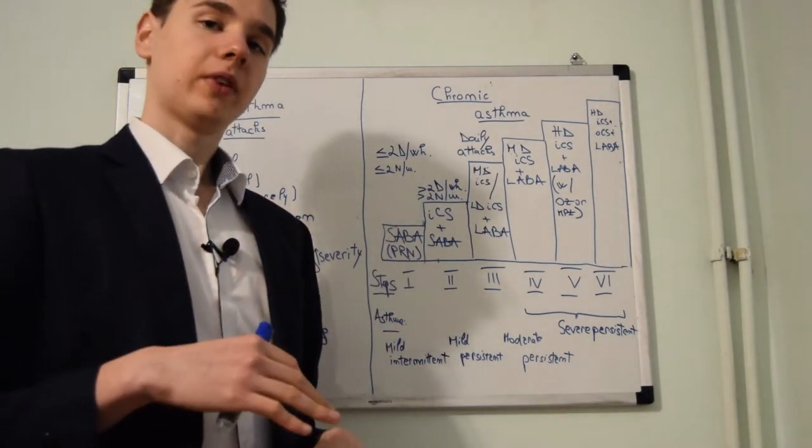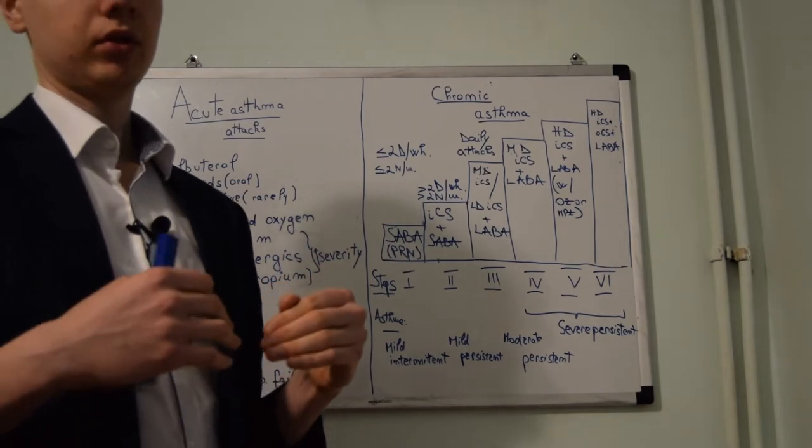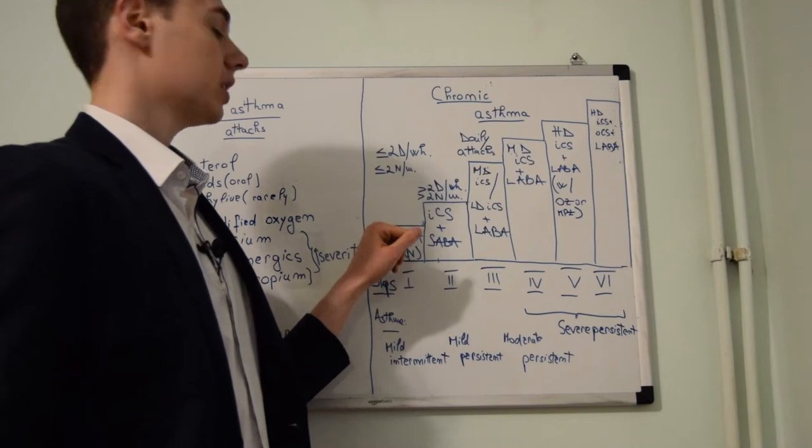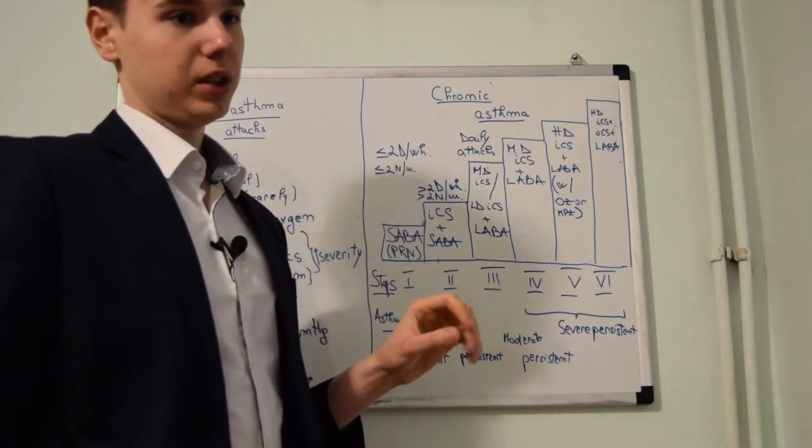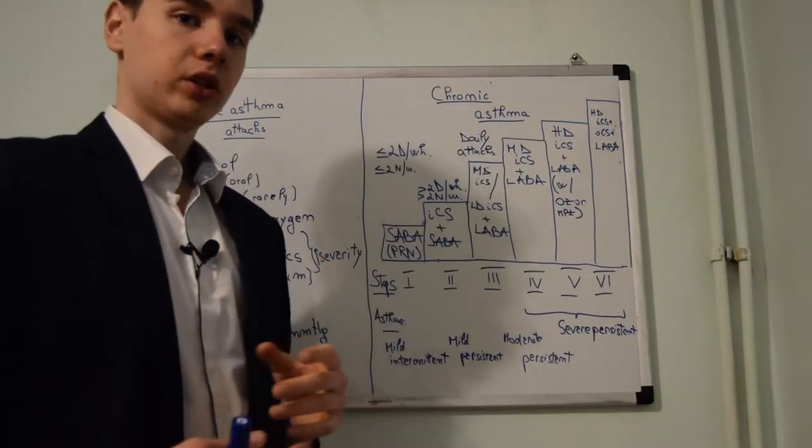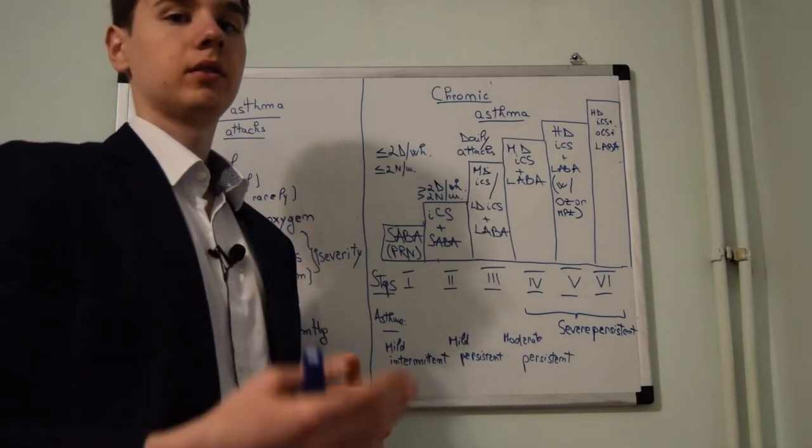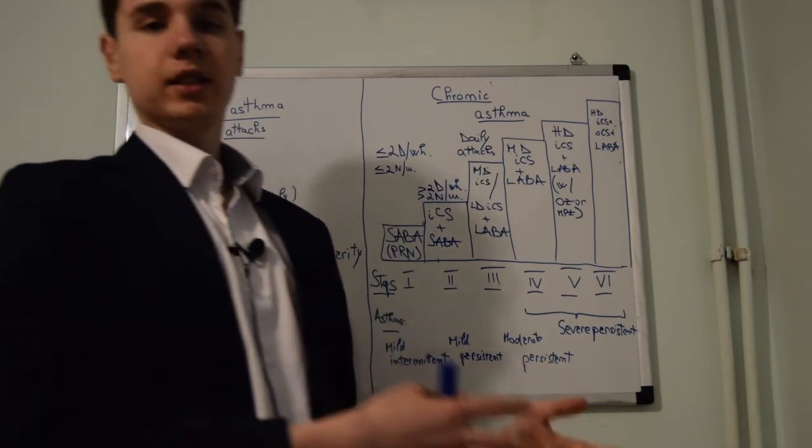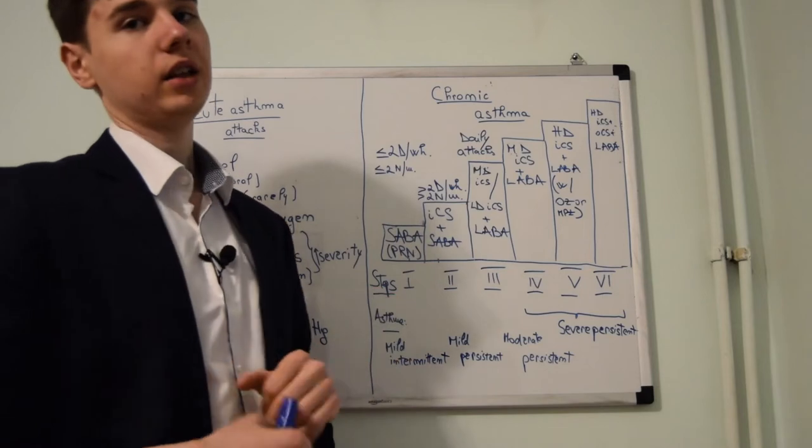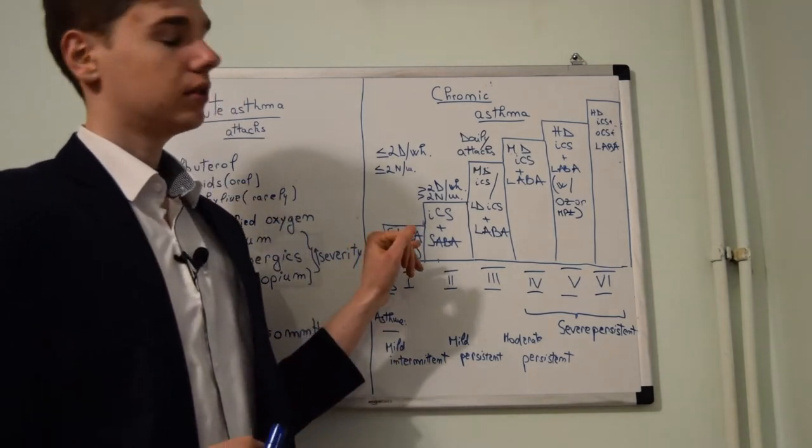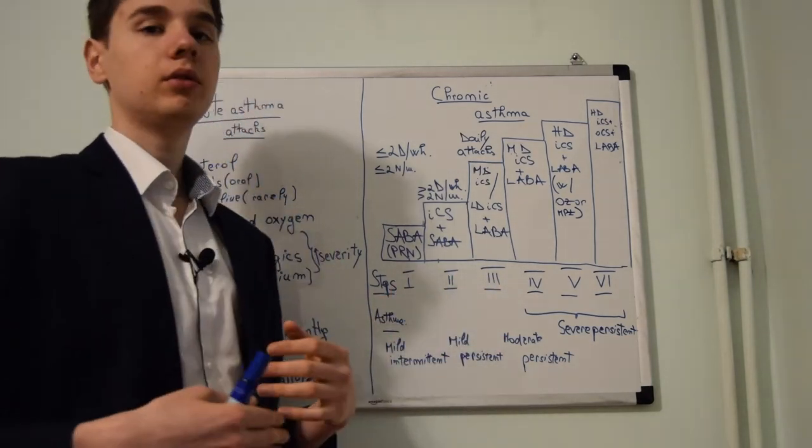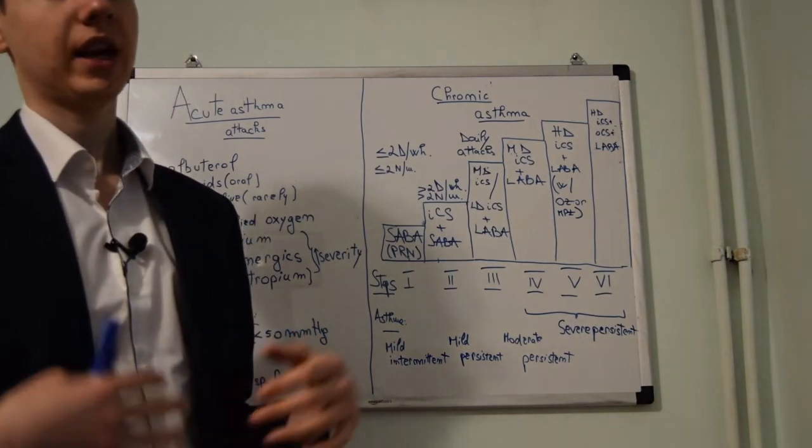For this form of asthma we use the first step of asthma treatment: short-acting beta-2 agonists whenever needed. SABAs are actually albuterol. For a patient who presents with mild persistent asthma, the second step is represented by a low dose of inhaled corticosteroids and albuterol. Mild persistent asthma is defined by more than two days per week or more than two nighttime attacks per month.